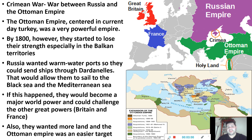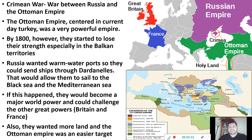If Russia got a particular section, they could go to the Black Sea, and from the Black Sea they could go to the Mediterranean, and from the Mediterranean they could trade, they could expand — things would be looking good for them. The problem was that if this happened, they would become a major world power, and countries like France and Britain really didn't like that. There were also some religious factors, but we won't talk about those too much.